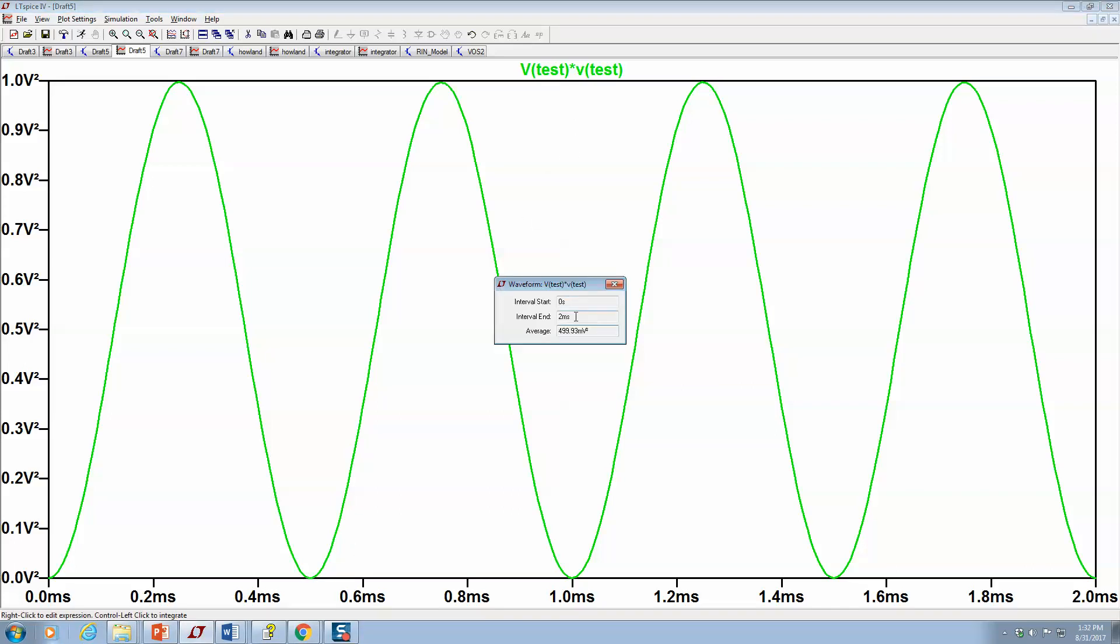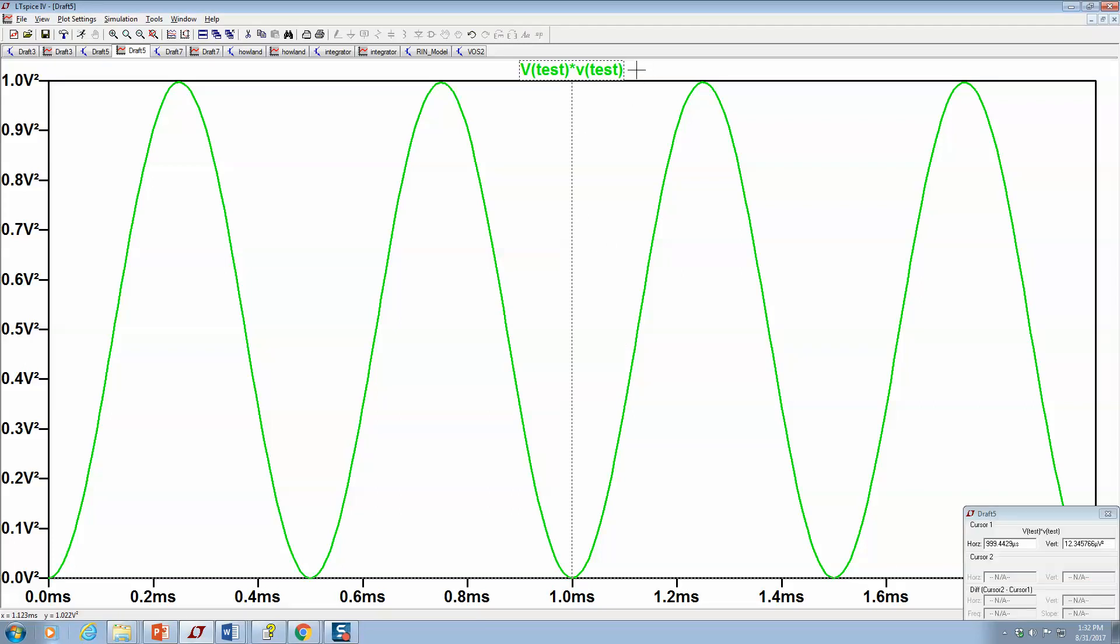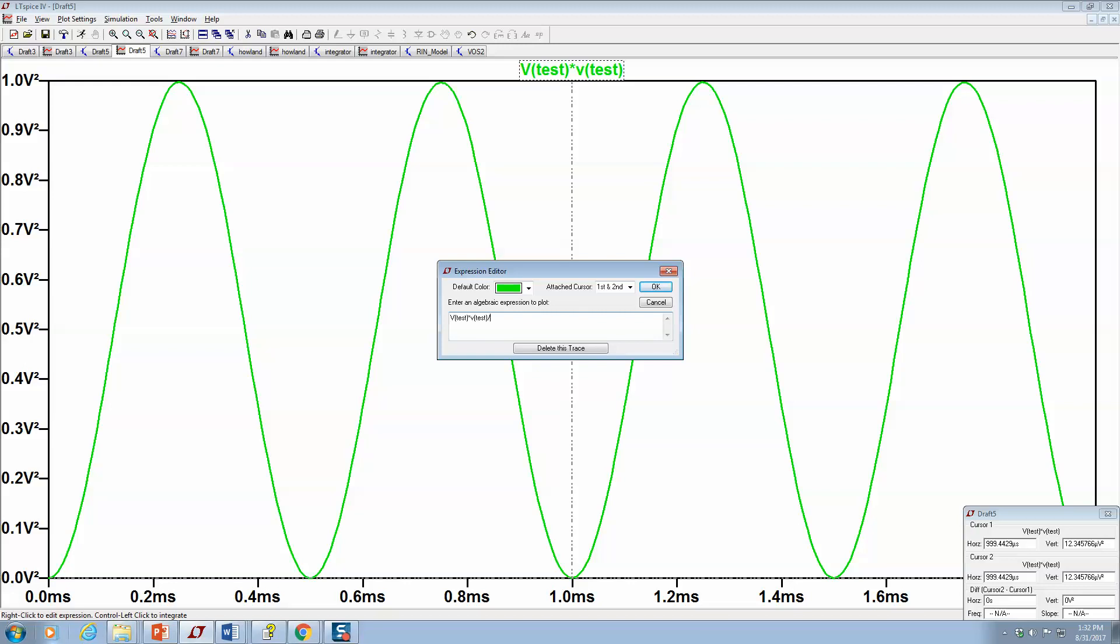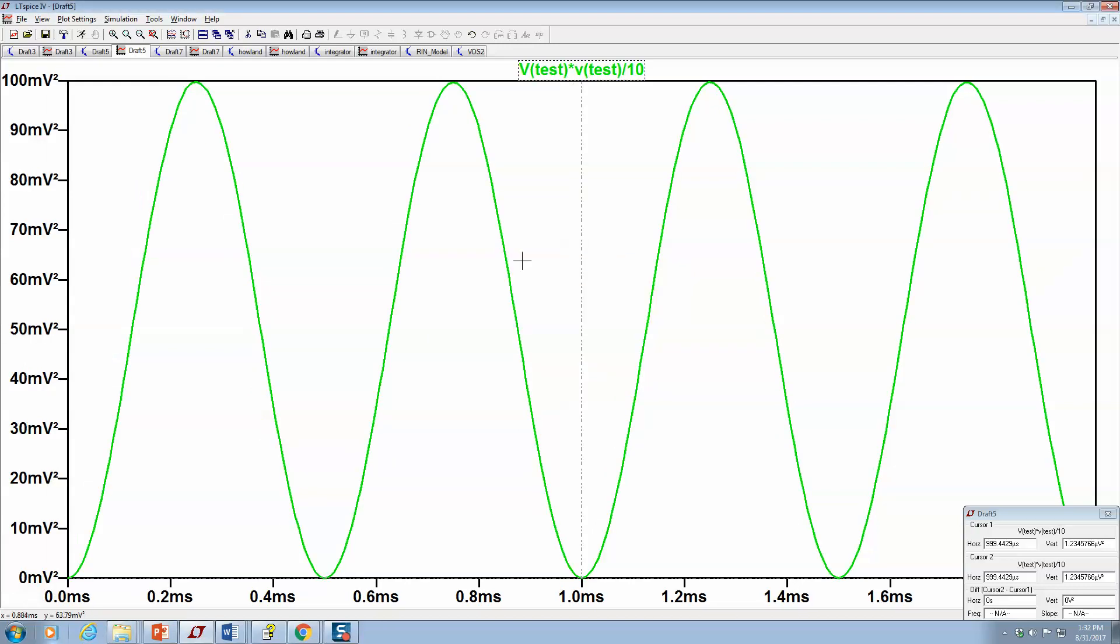And if I click on it right now, it just gives me an average. And if I wanted the power, let's say we were running that voltage through a 10 ohm load, V squared divided by 10, that average should be the RMS power.